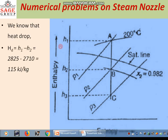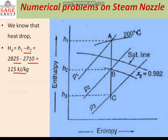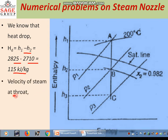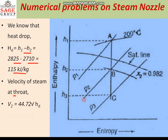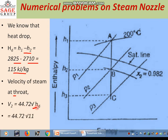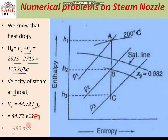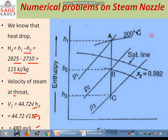The heat drop HD equal to H1 minus H2, putting the values 2825 minus 2710, gives 115 kJ per kg. The velocity of steam at the throat is V2 equal to 44.7 times square root of HD. Putting HD equal to 115, we get the velocity equal to 480 meters per second.